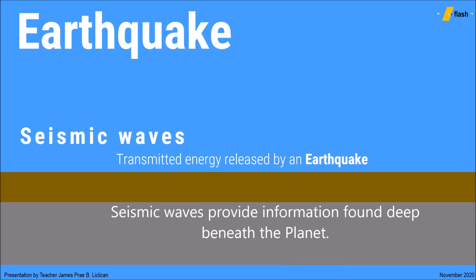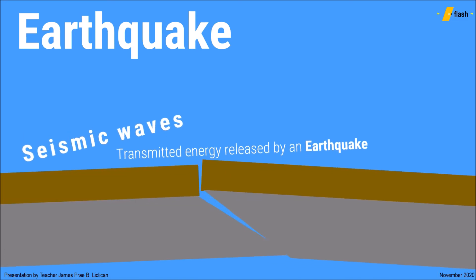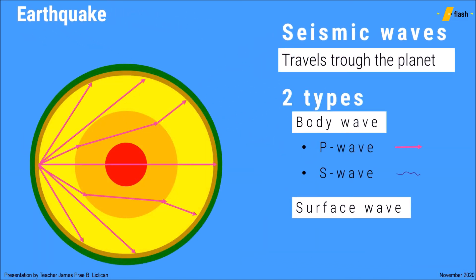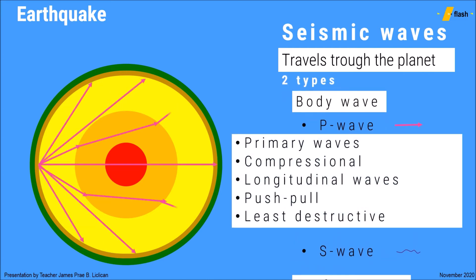Using this data, we better understand the structure of our planet. Based on the seismic waves produced by earthquakes, we were able to infer that the planet is composed of three distinct layers. Seismic waves or body waves have two forms: P waves or primary waves, and S waves or secondary waves. Both of these waves travel deep beneath the Earth.